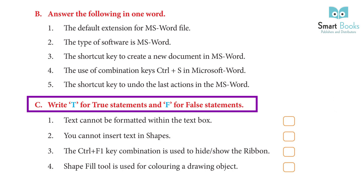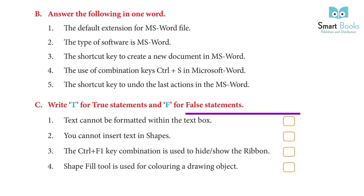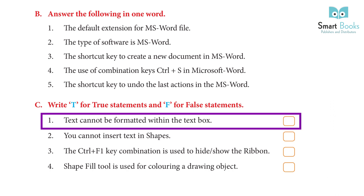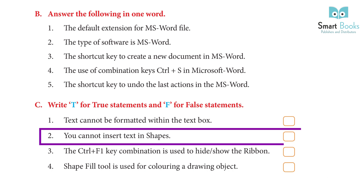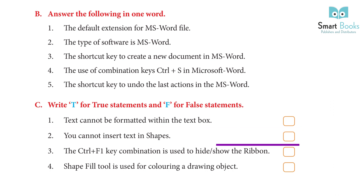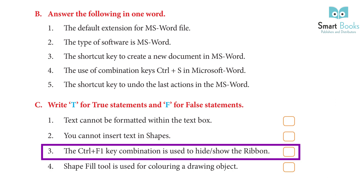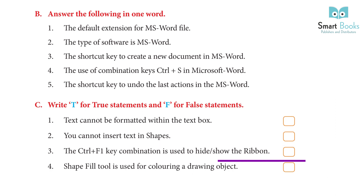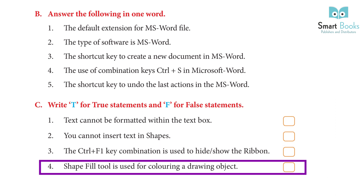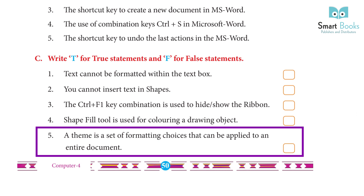Write T for true statements and F for false statements. 1. Text cannot be formatted within a text box — Answer: False. 2. You cannot insert text in shapes — Answer: False. 4. The Shape Fill tool is used for colouring a drawing object — Answer: True. 5. A theme is a set of formatting choices that can be applied to an entire document — Answer: True.